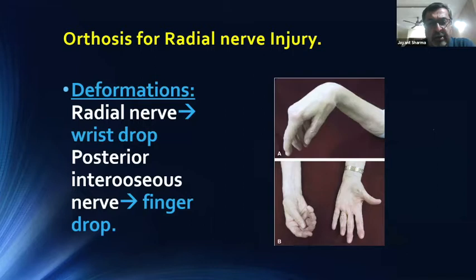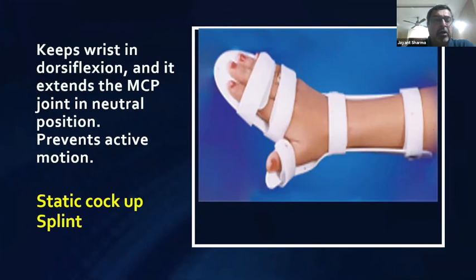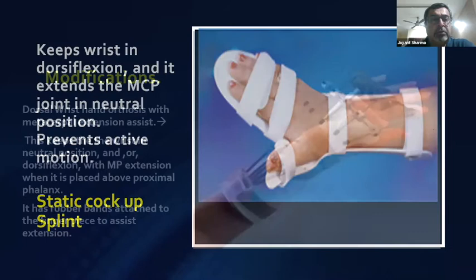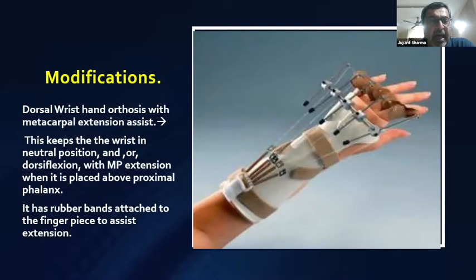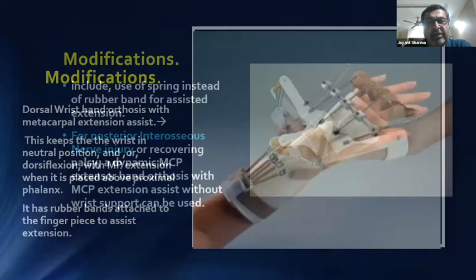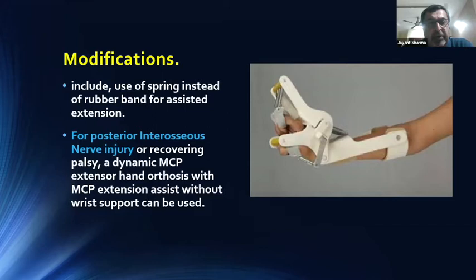For the radial nerve, the deformity is wrist drop. For posterior interosseous nerve injury it is finger drop — the key difference being more finger deformity with PIN injury. A static cock-up splint is used for the first three weeks, keeping the wrist in dorsiflexion and MCP joints in neutral position, preventing active motion. After three weeks, a dynamic dorsal wrist orthosis with metacarpal extension is given, keeping the wrist in neutral or dorsiflexion with MCP extension, using rubber bands on the fingers to assist extension. A spring may be used instead of rubber bands. For PIN injury or recovering nerve palsy, a dynamic MCP extensor orthosis with MCP extension assist without wrist support is used.